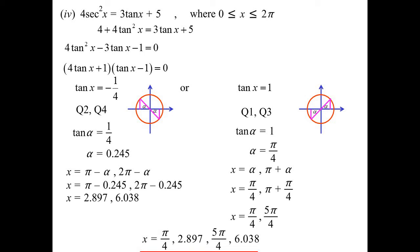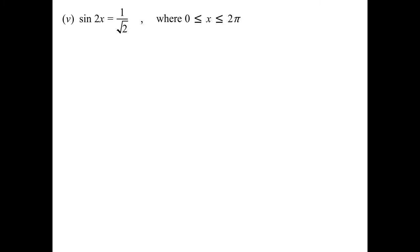To summarize our answers: you'll notice the ones I knew the exact value for I left as exact values, so I've left them as π/4 and 5π/4, whereas the approximations I've left as 2.897 and 6.038.